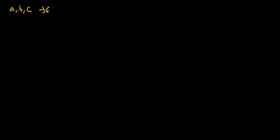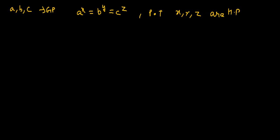Today we will be solving problems on harmonic progression. The first question is: if a, b, c are in GP, and a to the power x equals b to the power y equals c to the power z is given, we need to prove that x, y, z are in HP.